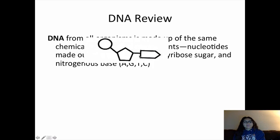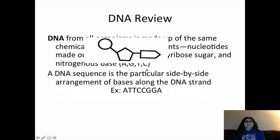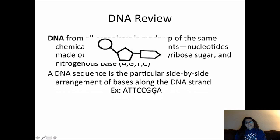Don't get caught up on the shapes — as long as you know that a phosphate connects to a deoxyribal sugar, which connects to a nitrogenous base, that's good. The sequence of A's, G's, T's, and C's side by side is what spells out the instructions. This is what would spell out certain instructions in the DNA.